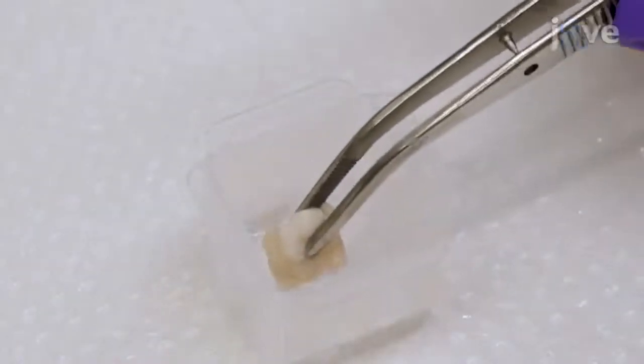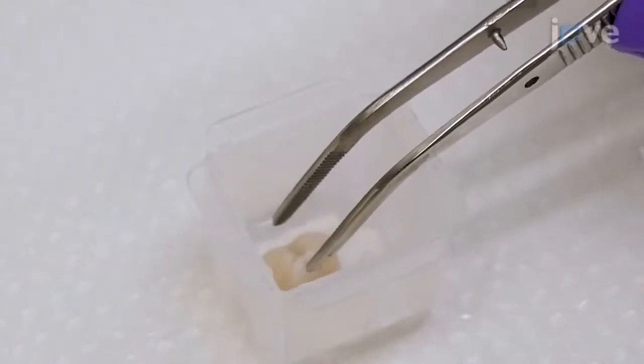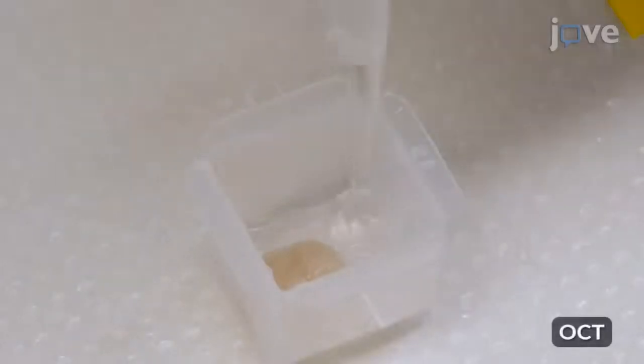To embed the brain stem section, place its cut surface on the bottom of an embedding mold and add optimal cutting temperature compound to surround the brain stem.